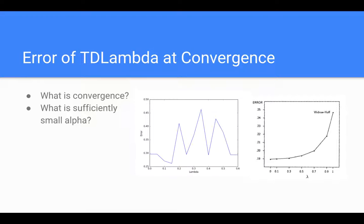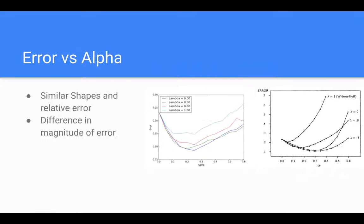The paper doesn't specify what convergence is, and it doesn't specify what a sufficiently small alpha is. There are two input parameters into TD lambda: lambda and alpha, the learning rate. We believe the reason we weren't really able to reproduce the research here is that we either did not use a sufficiently small alpha, or we did not run it until convergence.